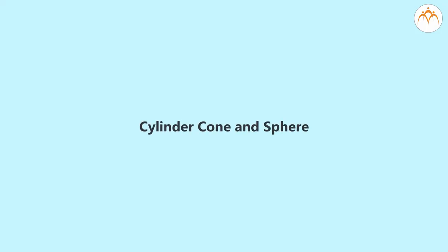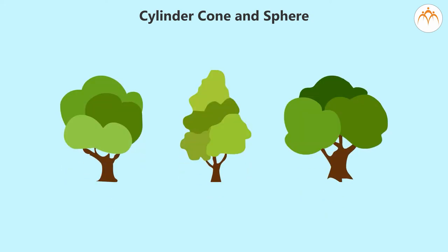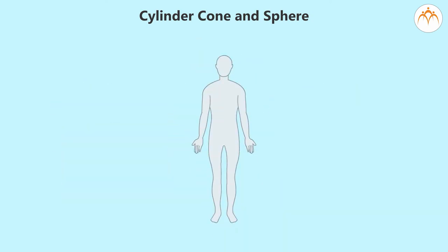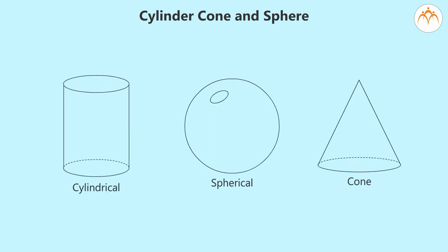When we look around, we see so many different objects that occupy space. There are trees, tables, walls, balls, cones. If we try to observe and find similar objects that we see around, they have cylindrical, spherical, and cone-like shapes. Let us study the surface area of these objects.